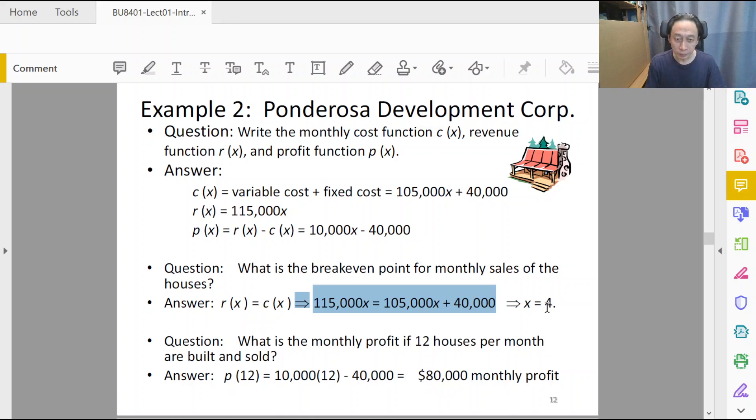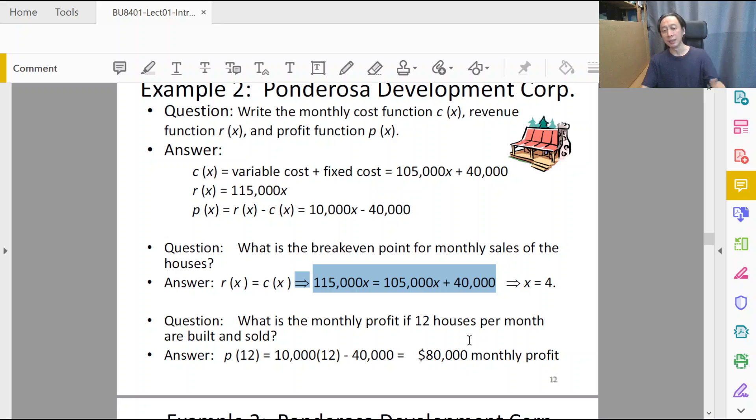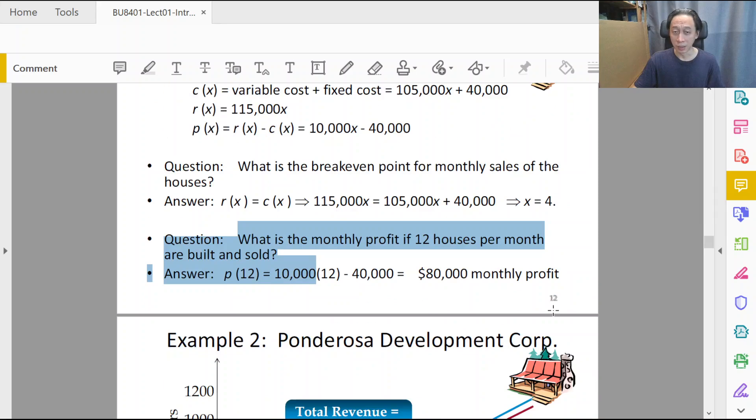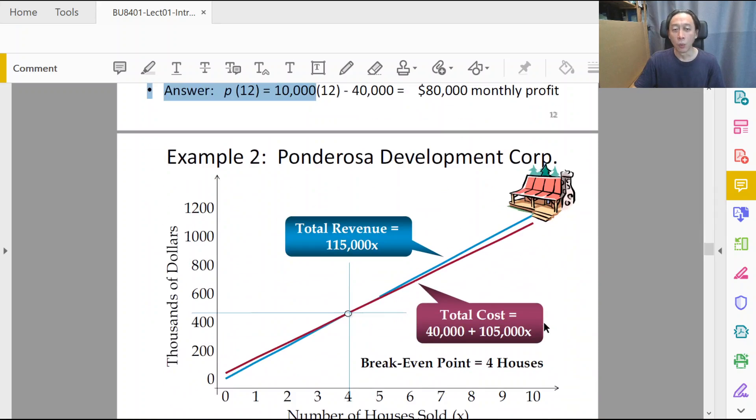Of course then we can answer various questions from there and we can talk about profits and all that. But wait, this question about profit doesn't really care about what is the value of x. So what's the point of finding out about the break-even quantity? What's the whole point?